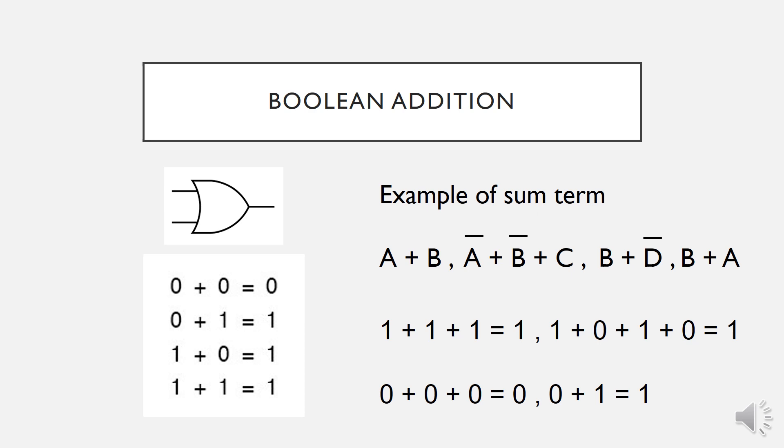Elementary Boolean algebra has four basic operations: addition, subtraction, multiplication, and division. Whereas in Boolean algebra, it has only two operations, namely addition and multiplication.